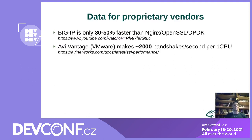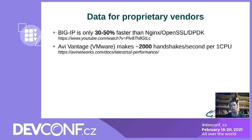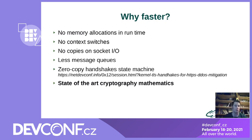If we compare the numbers with proprietary vendors, you can find a video from an F5 engineer about performance comparison between Big-IP and Nginx with OpenSSL over DPDK. F5 is about 30 to 50% faster. However, in this comparison OpenSSL is the bottleneck, and it doesn't matter whether you run over DPDK or plain Linux I/O, because network I/O isn't the bottleneck in the benchmark. If we compare with AVI Networks, acquired by VMware, we see that they provide relatively the same performance numbers as basic OpenSSL.